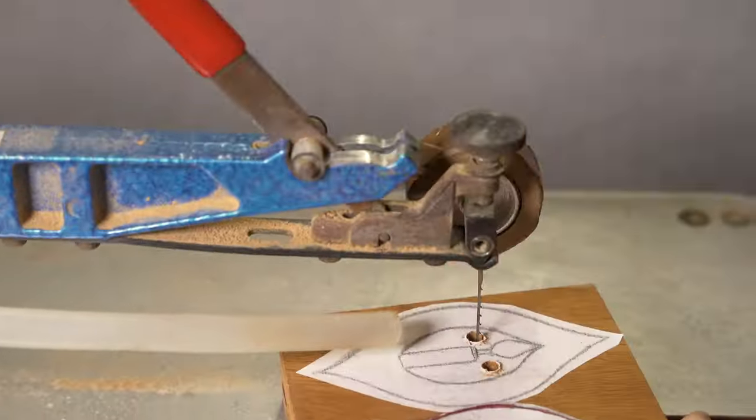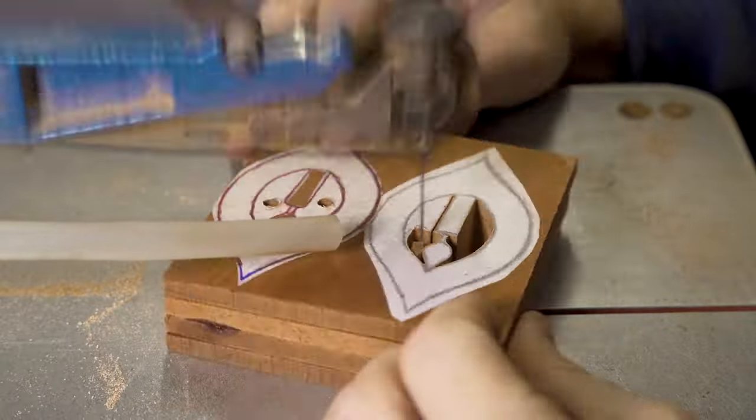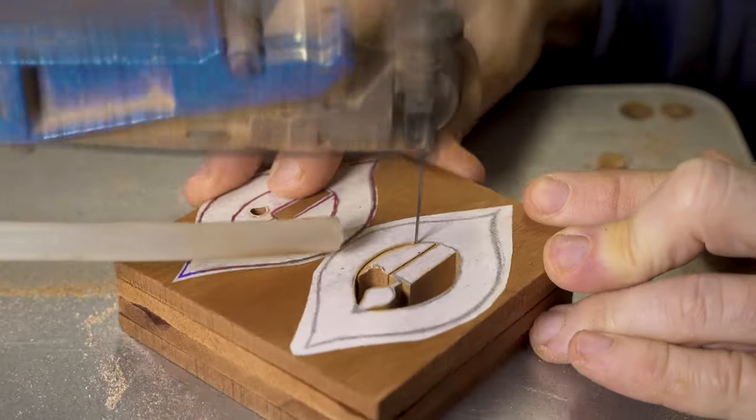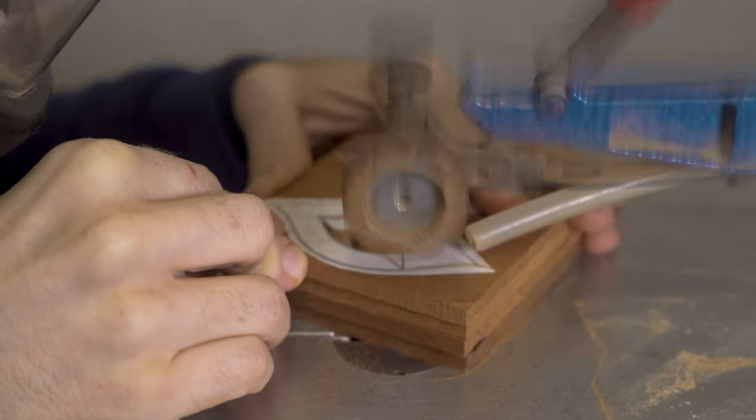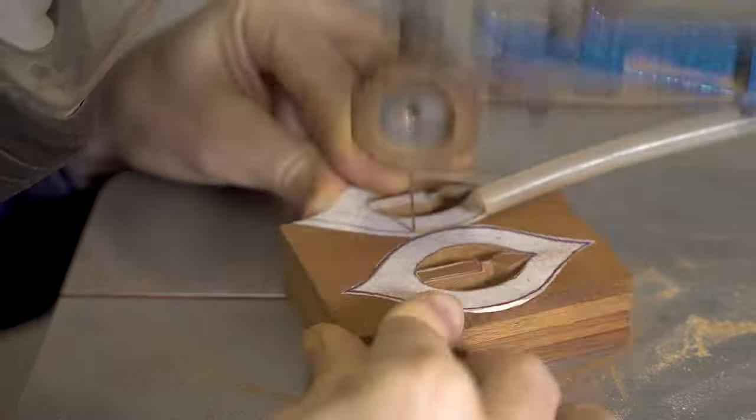Onto the scroll saw and we start to do our pierce work. We cut out the surround around the outside of the candle and then proceed to do the same with cutting the outline of the flame shape that the candle is contained within.